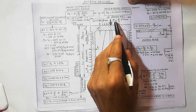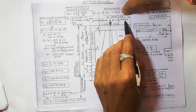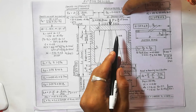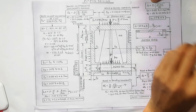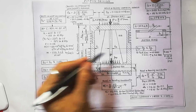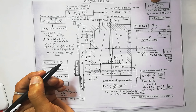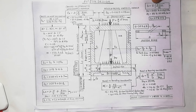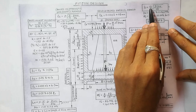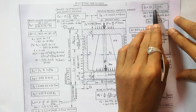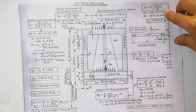The maximum gas load P is equal to (pi/4) times D squared times P_max. For the piston ring, b (the width) is calculated using: b = D times the square root of (3 times p_w divided by sigma_t). This equation is used to calculate the parameters for the piston ring.